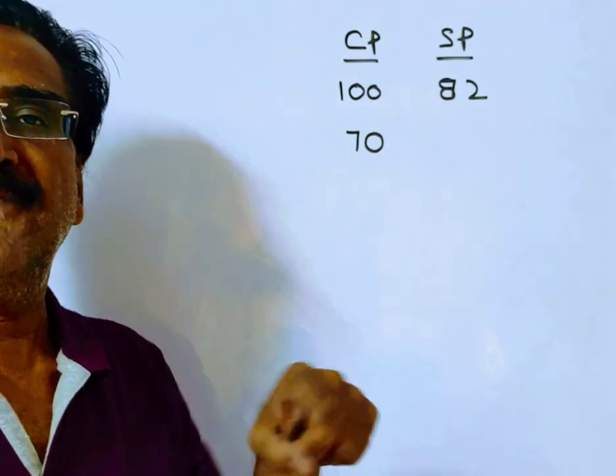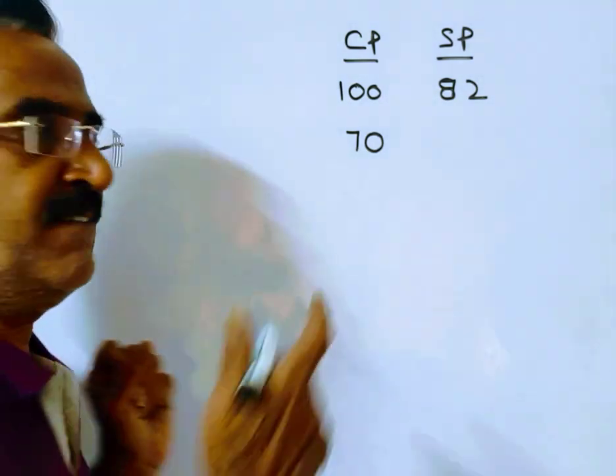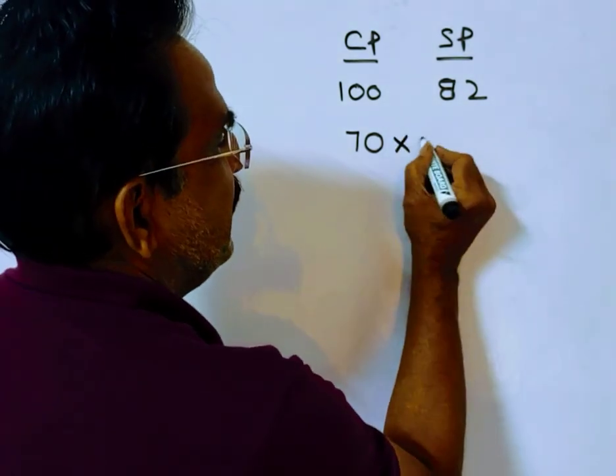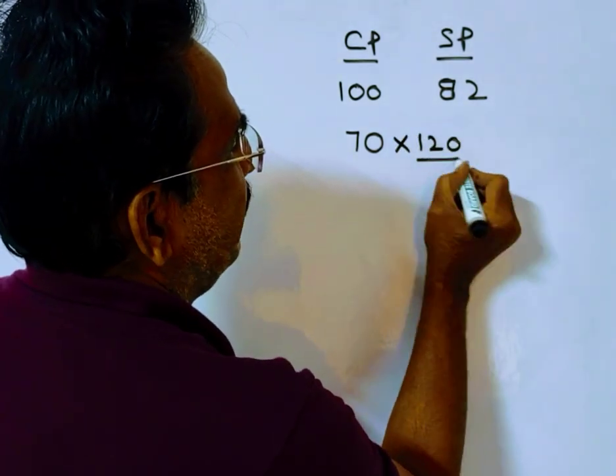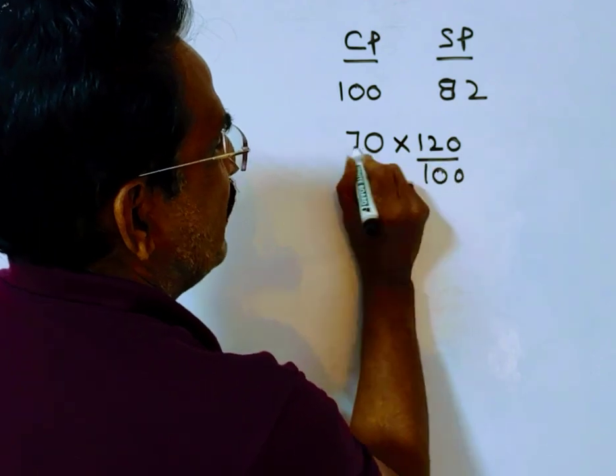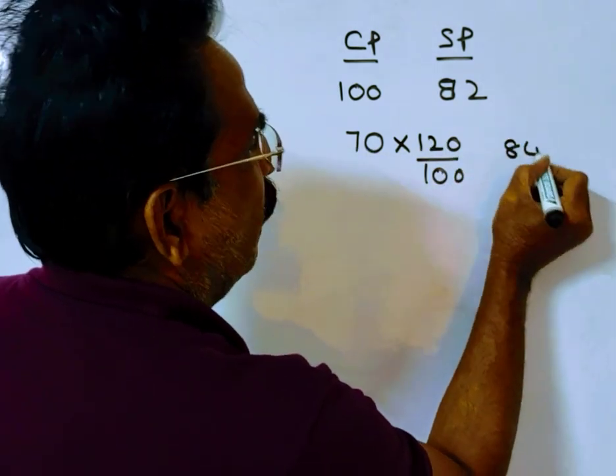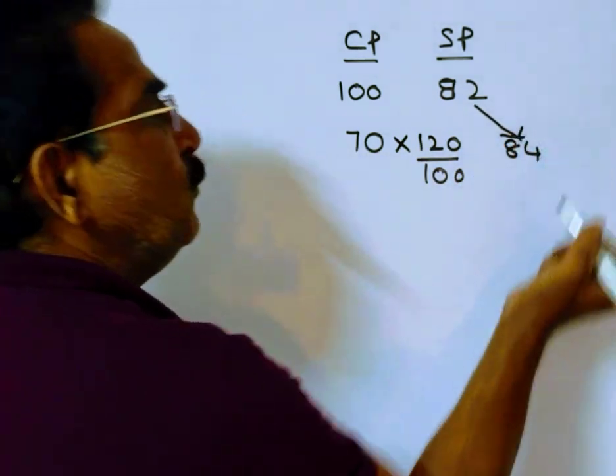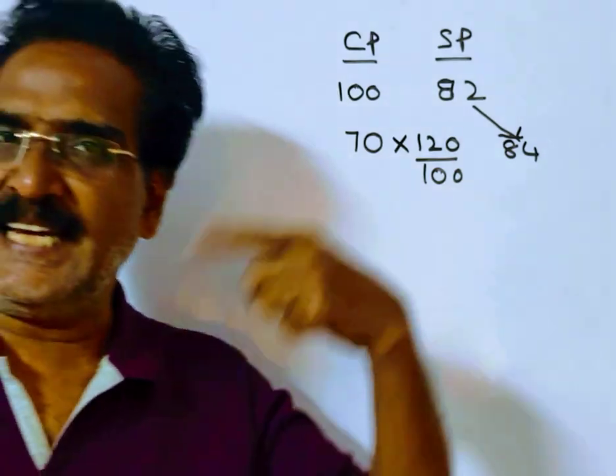20% profit on Rs. 70 means the selling price becomes 120 by 100, that is equal to Rs. 84, that is Rs. 2 more than the earlier selling price.